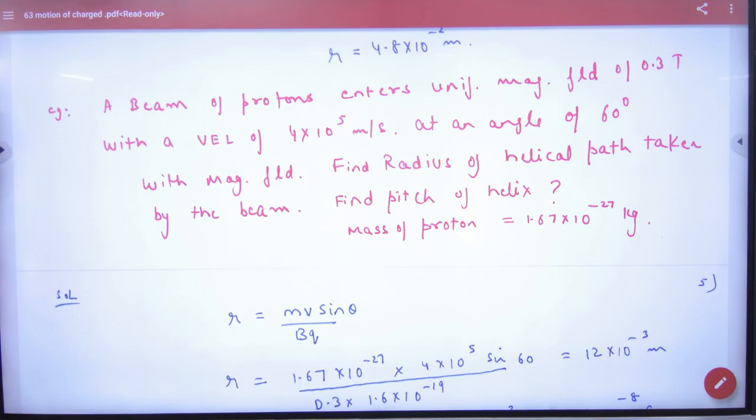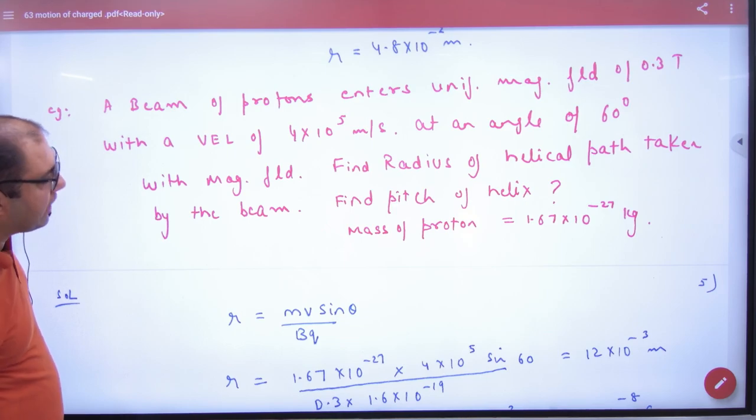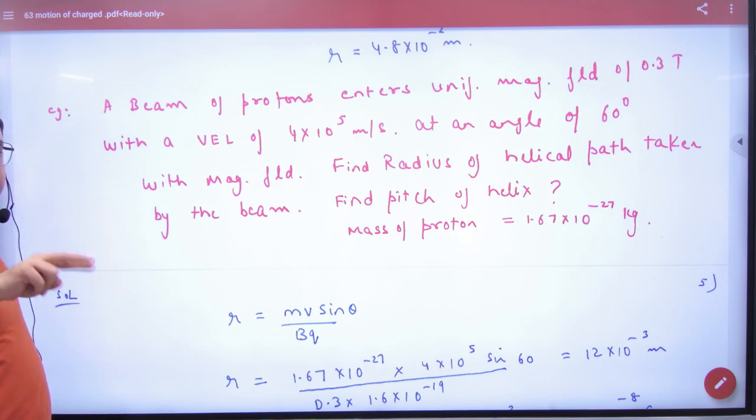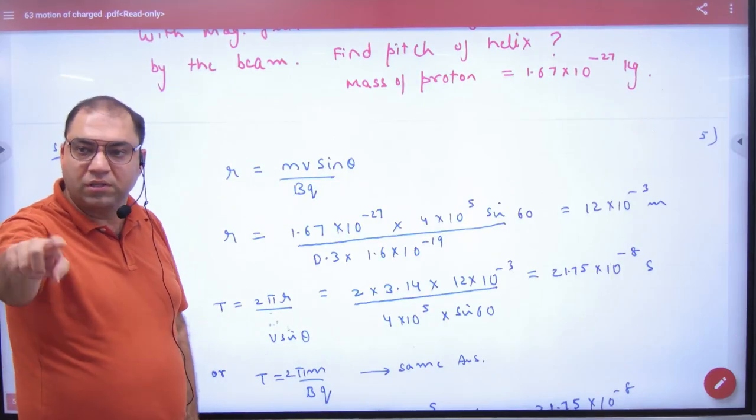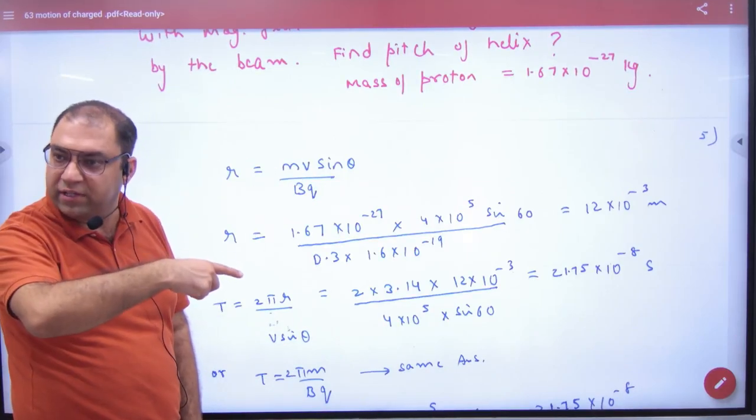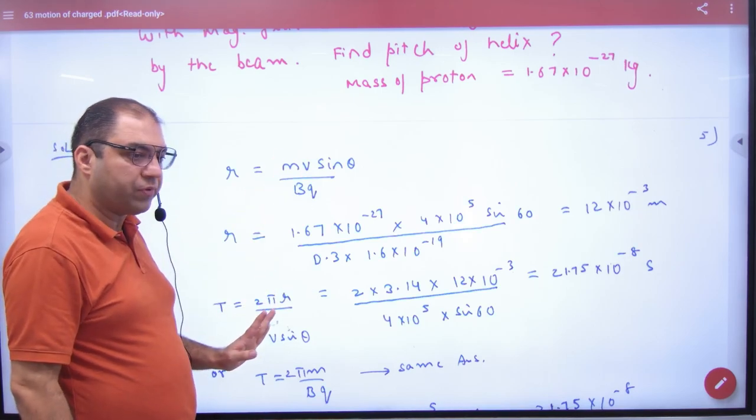Beam of protons enters uniform magnetic field given with a velocity of v given at an angle of 60 degree. Now the particle's velocity and beam angle is not 90, it is 60. So what will the particle go in? Helix. So what do we need to take in this case? Radius and the pitch. What is mv sin theta by bq. Now look, there is a helix here so formula noted that mv sin theta by bq.